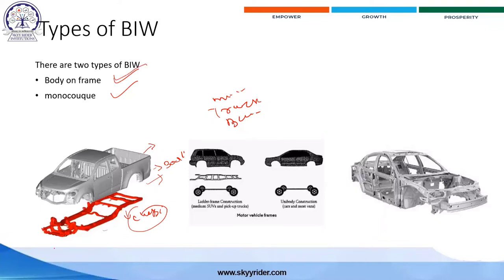Generally the chassis will be a ladder-type frame on which the body is placed. Vehicles that carry maximum loads — like trucks, buses, and mini trucks — use this body on frame type of BIW. Vehicles like Mahindra Bolero and Scorpio also have this body on frame type body structure.